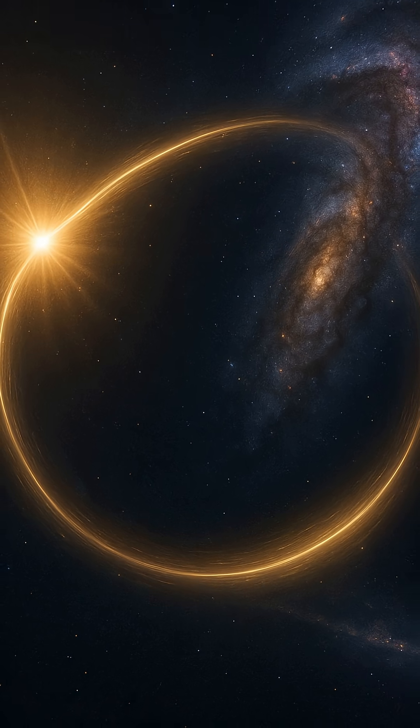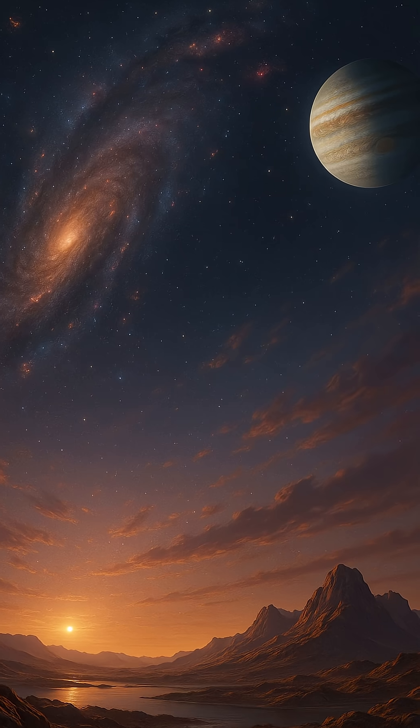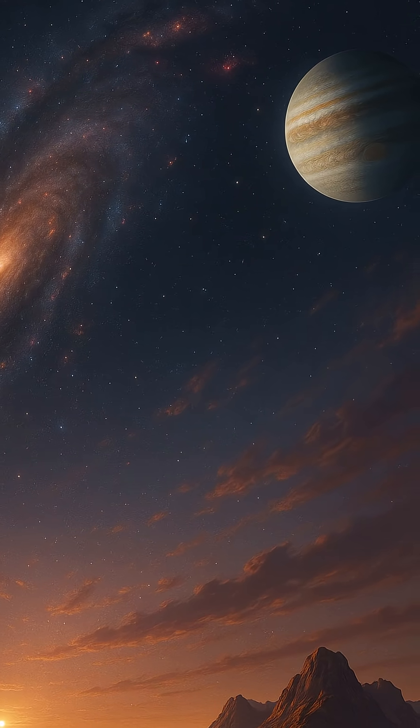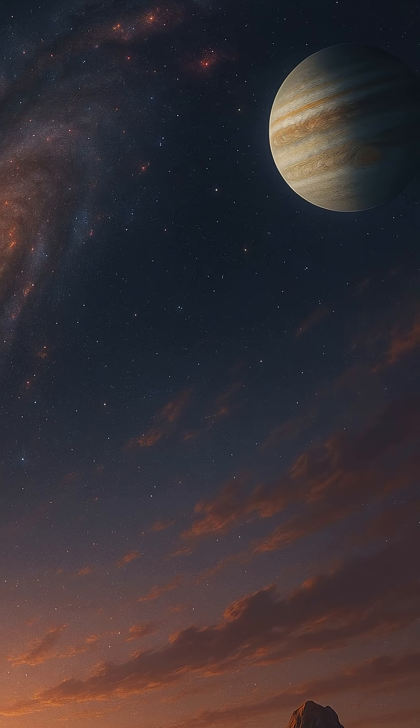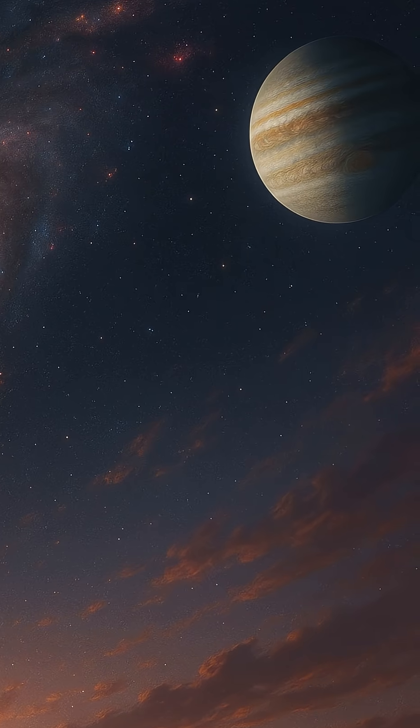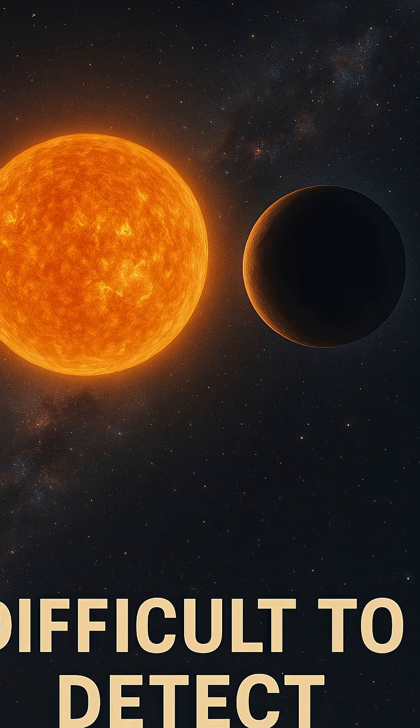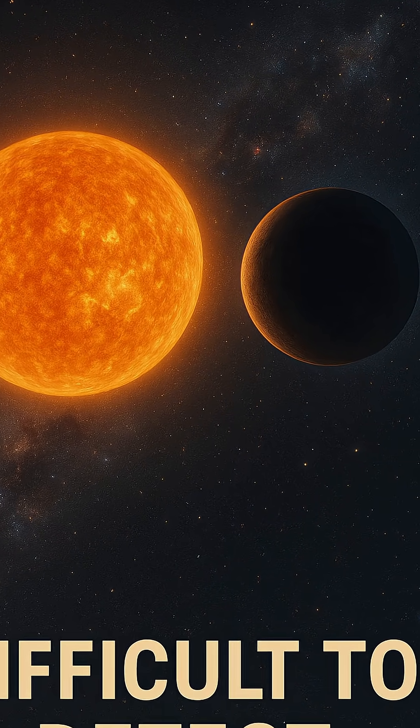Through a technique called gravitational microlensing, astronomers have caught tantalizing hints of planets orbiting stars in other galaxies. When a massive object, such as a star or planet, passes between us and a distant light source, its gravity can bend and magnify the background light, acting like a natural cosmic lens.